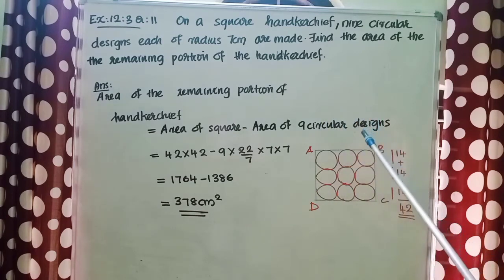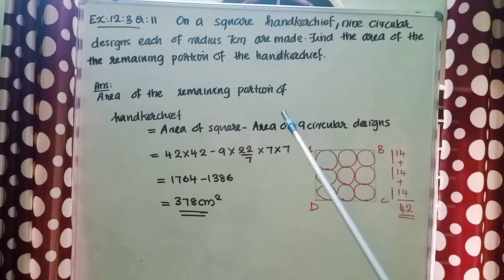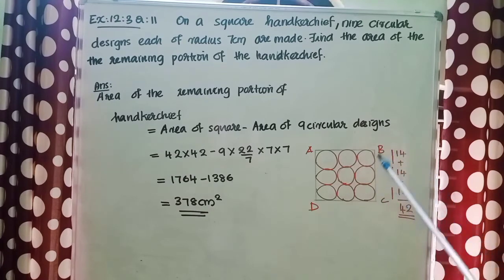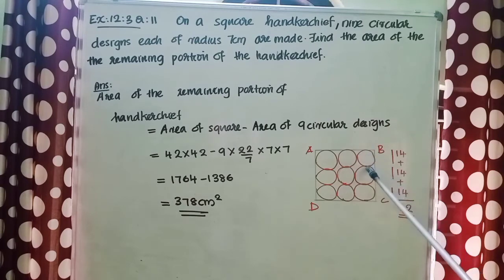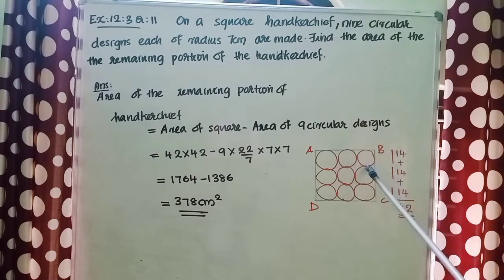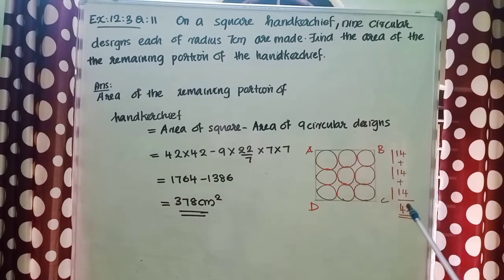The area of a circle is pi r squared, and the radius of each circle is 7 cm, as given in the question. The area of the square is side into side, but the side of the square is not given. So let us find the side of the square first. The radius of each small circle is 7 cm, so its diameter is 14 cm. The first, second, and third circles each have a diameter of 14 cm. So the side of the square is 14 plus 14 plus 14, that is 42 cm.